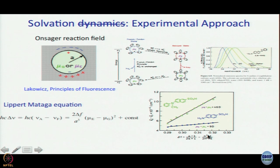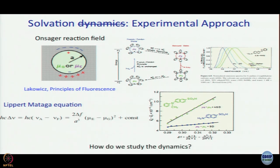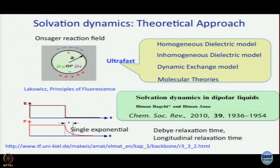What we have presented so far is the effect of solvation on steady-state spectra — we have not talked about dynamics yet. The question is how we study the dynamics of the excited state going from an unsolvated to a solvated species. Theory preceded experiment here, and theoretical approaches include: the homogeneous dielectric model, the inhomogeneous dielectric model, the dynamic exchange model, and molecular theories. In the order written, you are going from a coarser theory to a finer theory, starting with a model where the dielectric is homogeneous.